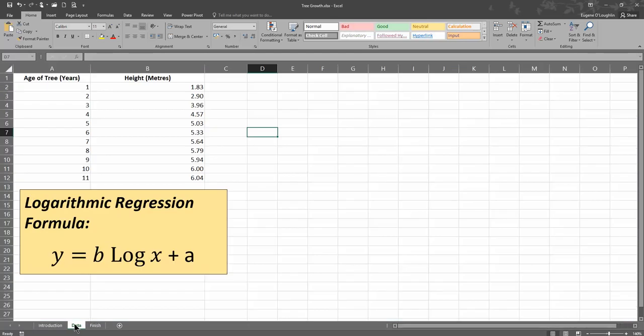Before we start, let's take a look at some sample data. I've got some very basic data here. In column A, I have the age of trees. So this is a tree growth experiment. I have the age of trees from age 1 year up to 11 years. And then in column B, I have the average height of the trees in a small forest in metres for each of these years.